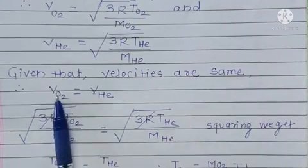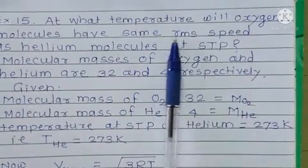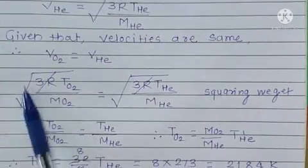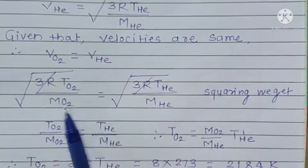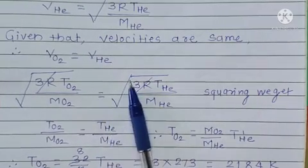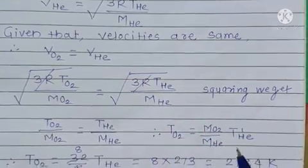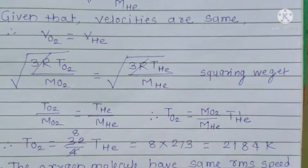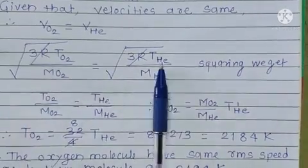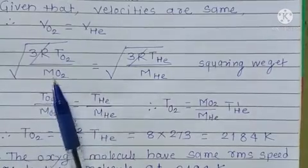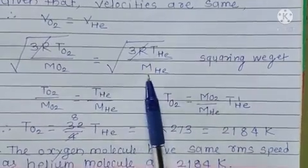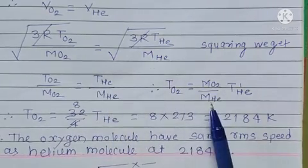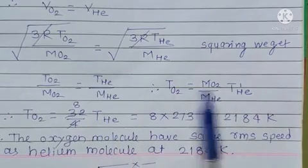Given velocities are same, so V of O2 equals V of helium. Squaring both sides, 3R T of O2 upon M of O2 equals 3R T of helium upon M of helium. This means T of O2 upon M of O2 equals T of helium upon M of helium.